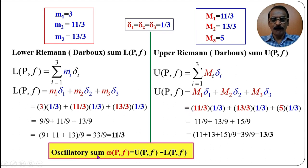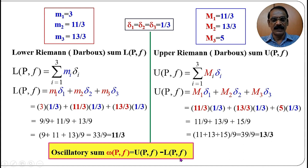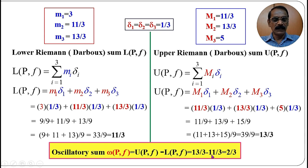The oscillatory sum ω(P, f) = U(P, f) − L(P, f) = 13/3 − 11/3 = 2/3. Thus, the lower Riemann sum is 11/3, the upper Riemann sum is 13/3, and the oscillatory sum is 2/3.